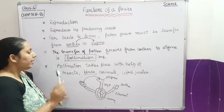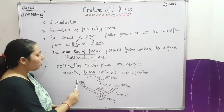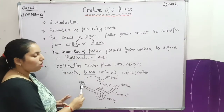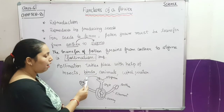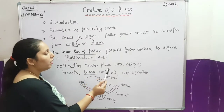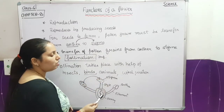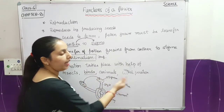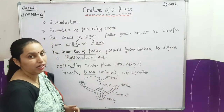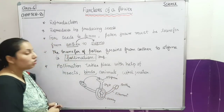Pollination can also take place with the help of birds, animals, wind, and water.